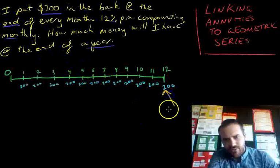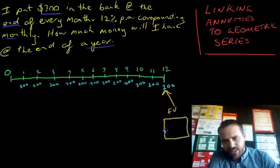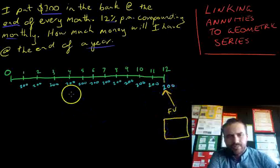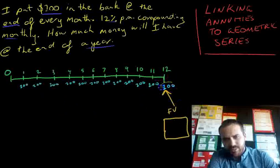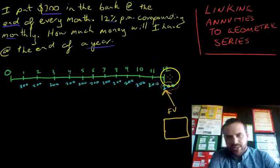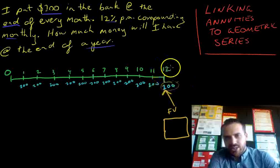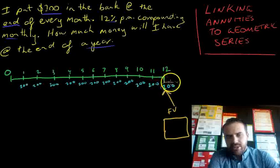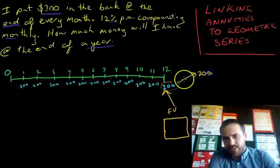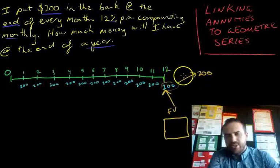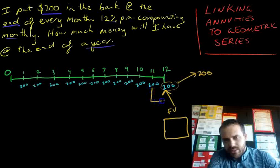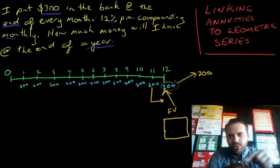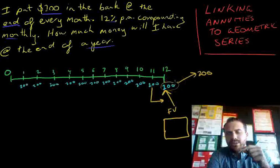Let's look at the future value of all of those amounts added together. This last one is really simple — the future value of two hundred dollars is two hundred dollars, because you put it in on month 12 and it's like you're pulling it out the same day. So the future value of that is 200 bucks.